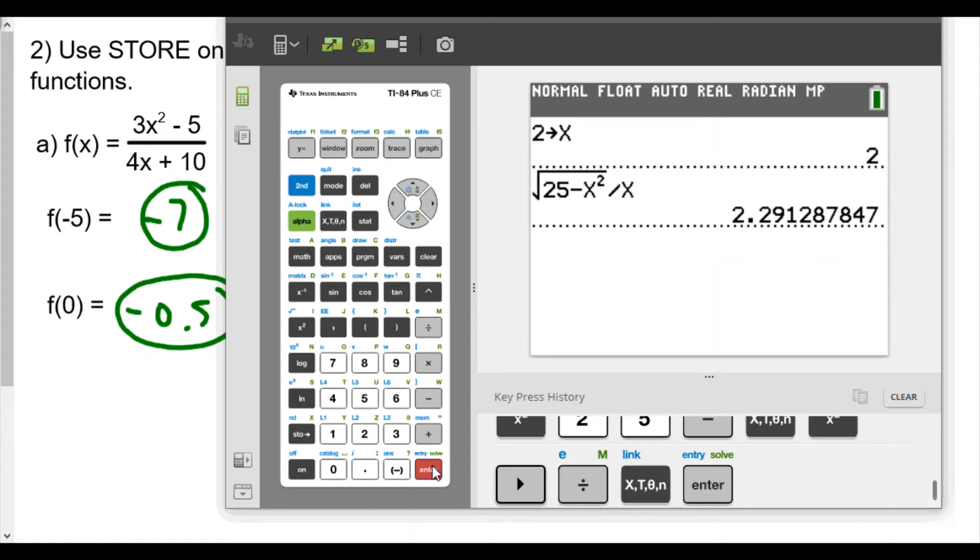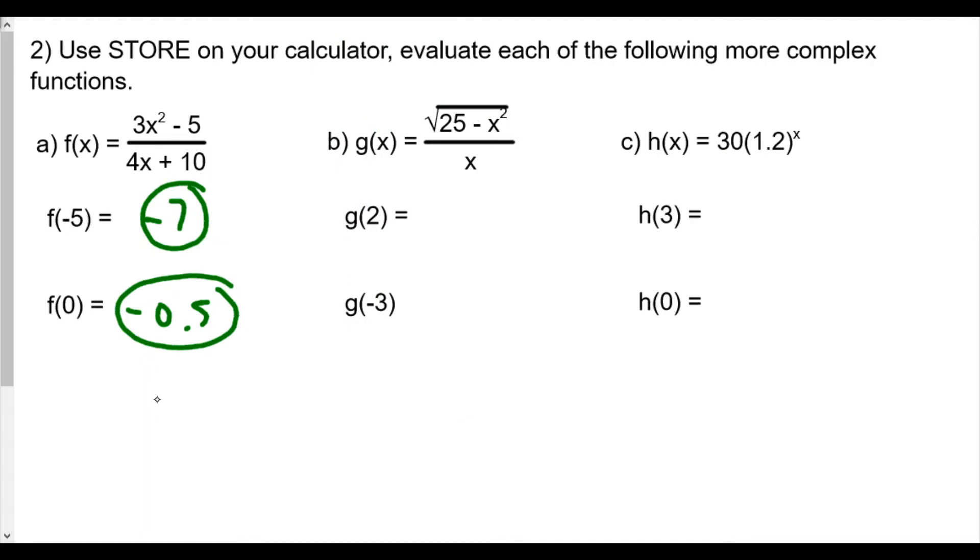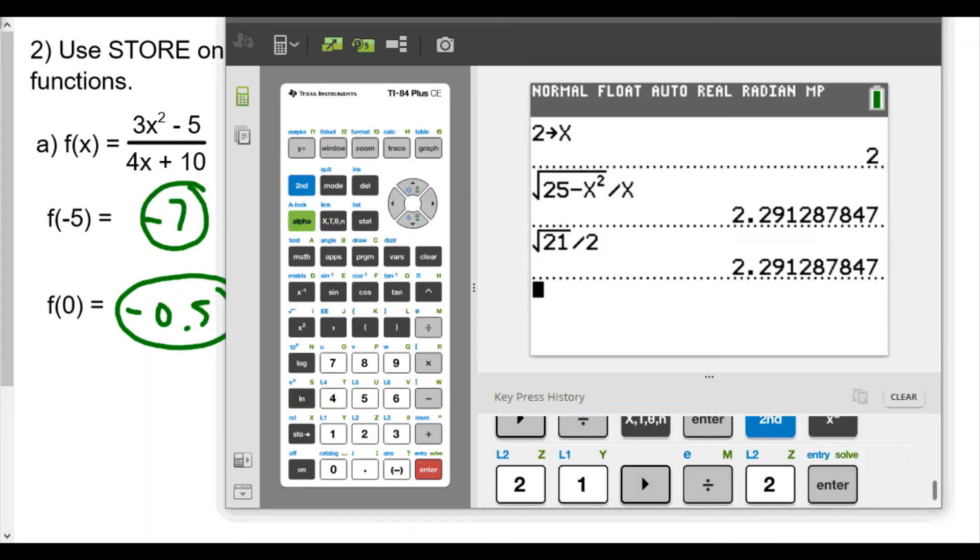That's not going to be a rational number mainly because the fact that 25 minus 2 squared will give you, in this case, 21. The square root of 21 is not a perfect square, therefore you're really going to get square root of 21 over 2. So just to make sure this works out, let's take a look: square root of 21, then divide by 2, and it does. So that's the exact value. It should be square root of 21 over 2, which approximates to 2.291.